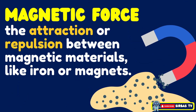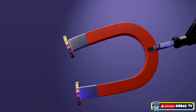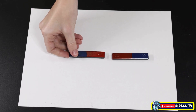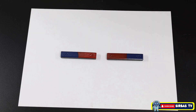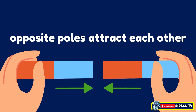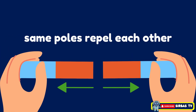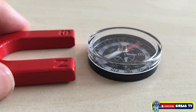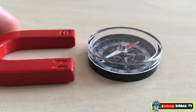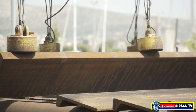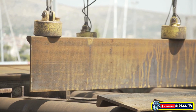Magnetic force is the attraction or repulsion between magnetic materials like iron or magnets. It can act over a distance without touching the object. For example, a magnet can pull paper clips toward it or push another magnet away. Magnets have poles — opposite poles attract, and the same poles repel each other. Another example is a compass needle, which aligns with Earth's magnetic field even though nothing is touching it. You can also see magnetic force in action with a crane lifting scrap metal at a junkyard — the magnet attracts the metal without touching it directly.